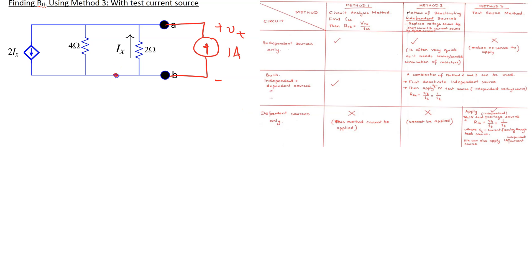For instance, we can use the node voltage method here. We can ground this node, and then the test voltage is actually the node voltage. We recognize that by using the symbol Vt for the node voltage. There are four branch currents in this case, so assume all branch currents are flowing away from the node.